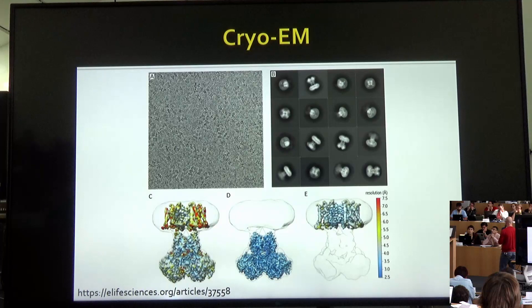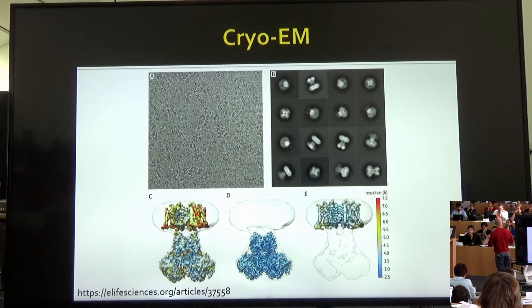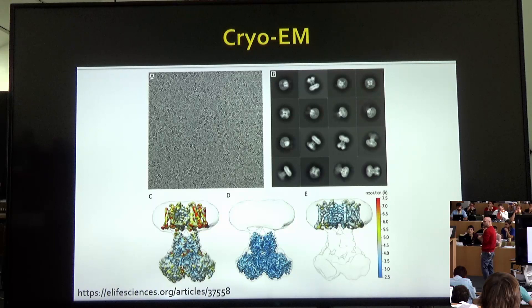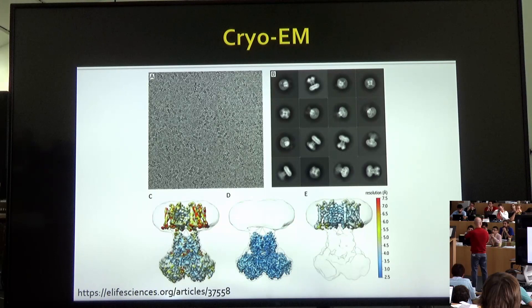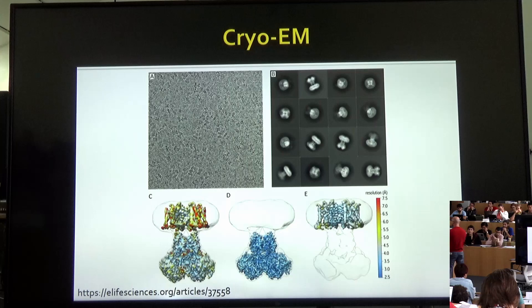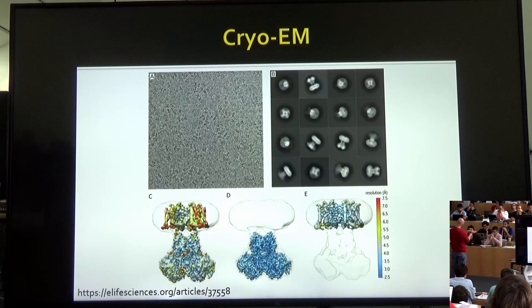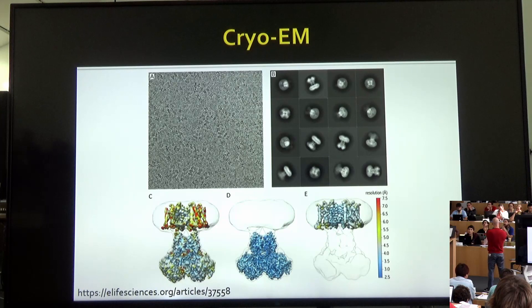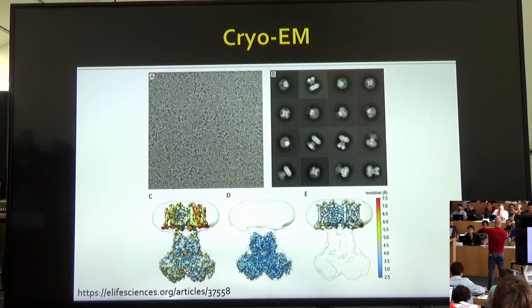A similar problem appears in cryo-electron microscopy (cryo-EM). You have a protein you're trying to image with extremely complicated structure. Some proteins don't crystallize, so in cryo-EM you take a sample of a molecule, freeze it into a thin sheet of ice, shave a piece off the top, and put it into the electron microscope.